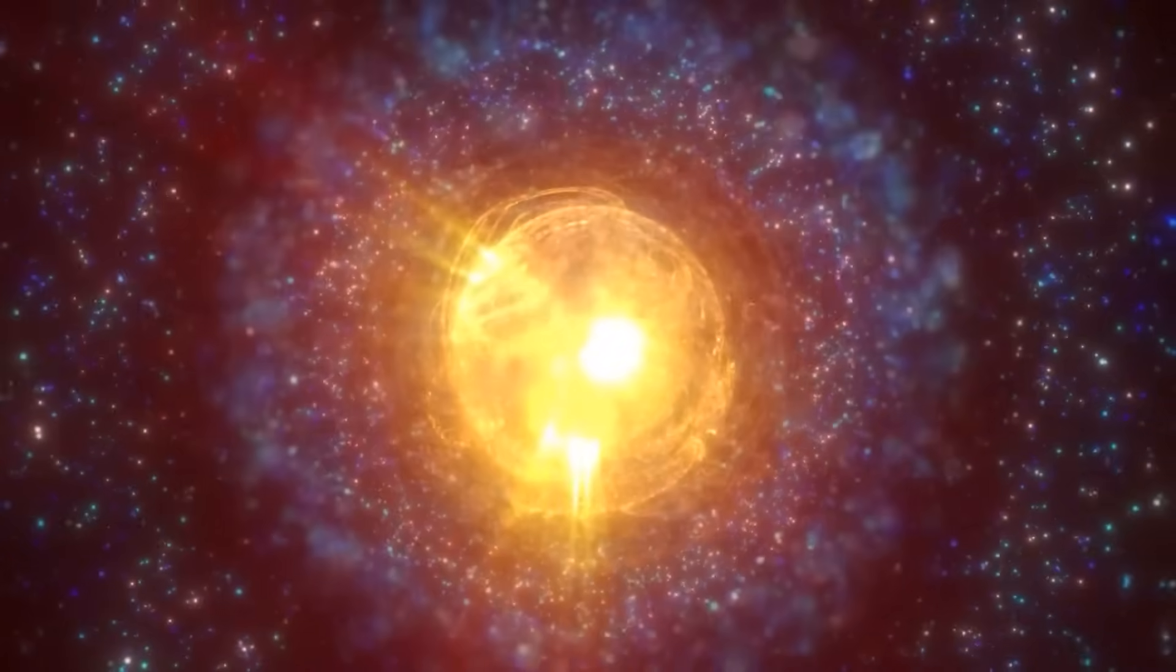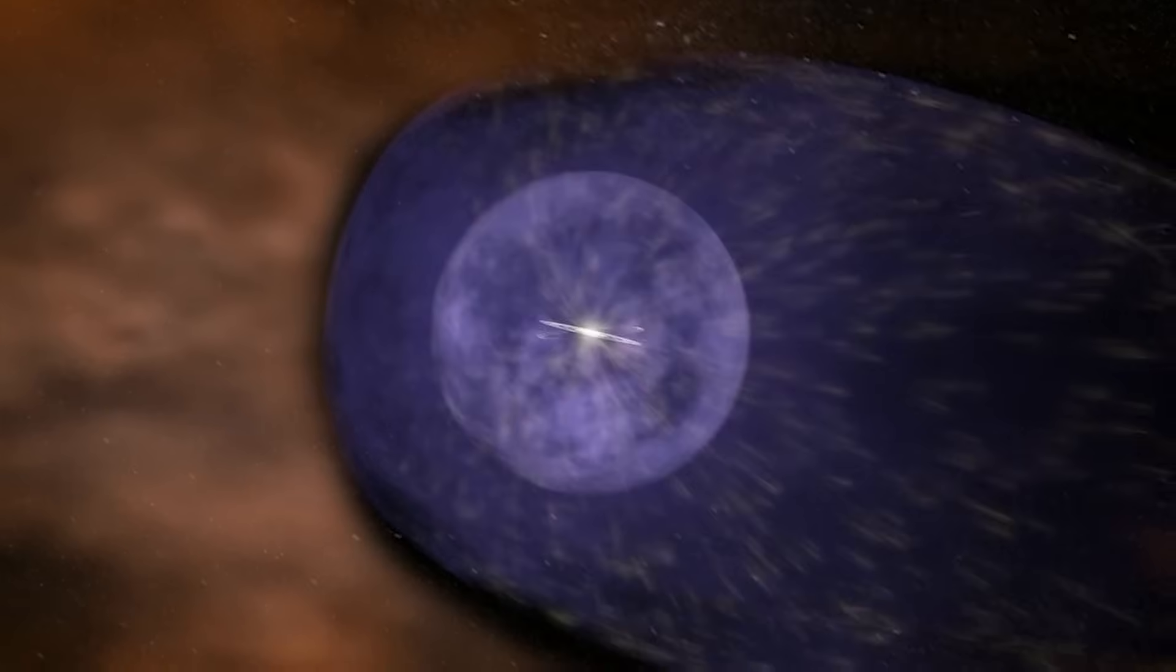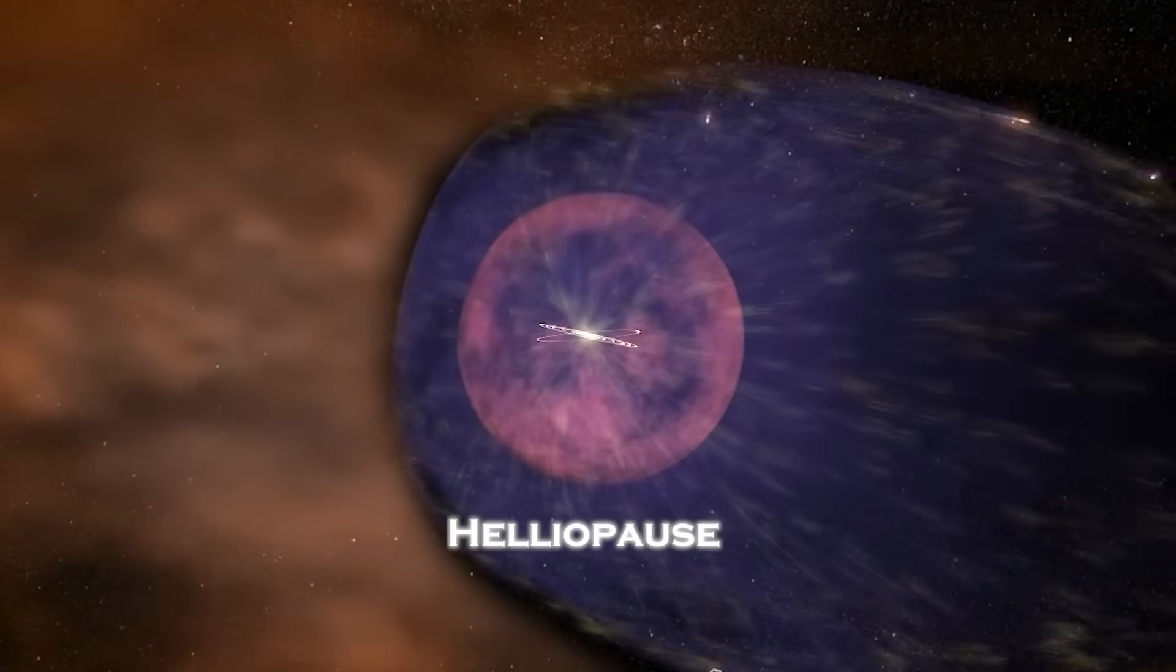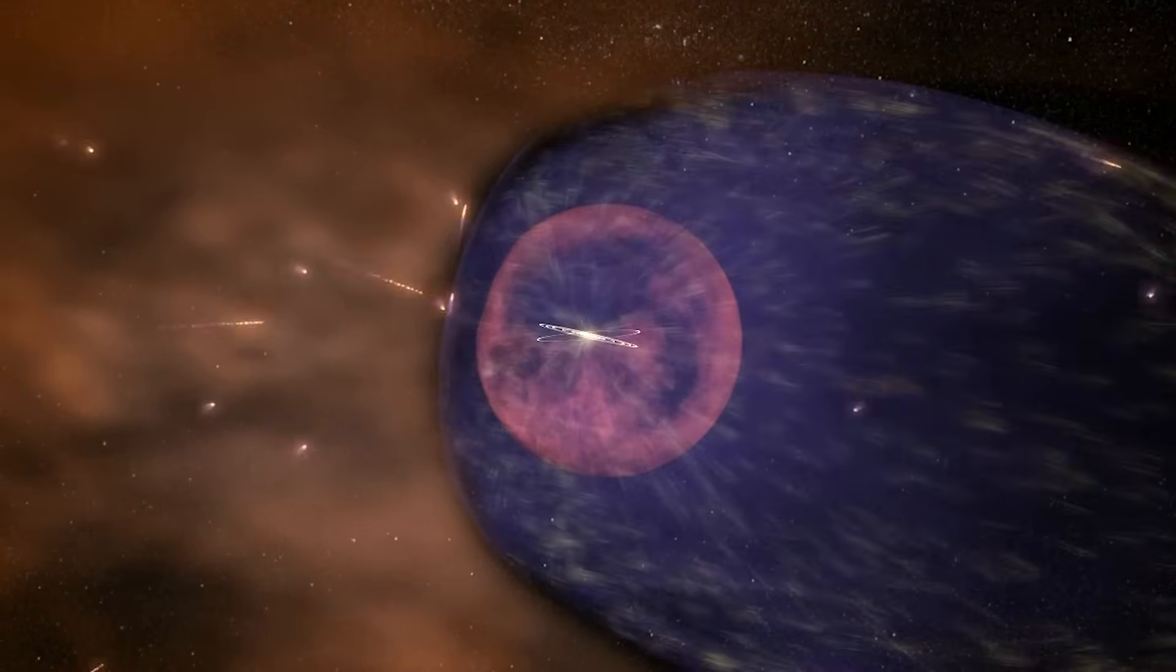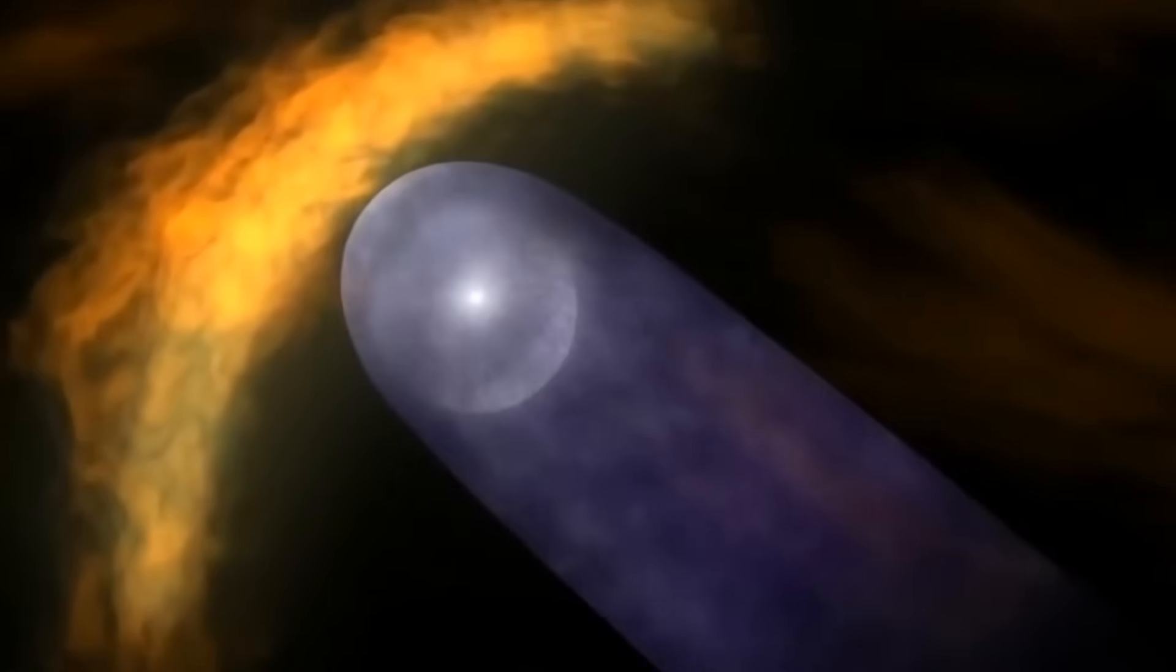One of the most surprising discoveries is the way interstellar space interacts with our solar system. The data suggests that the heliopause, the boundary Voyager crossed in 2012, is not static. It shifts and flexes, influenced by both the sun's activity and external forces from interstellar space.